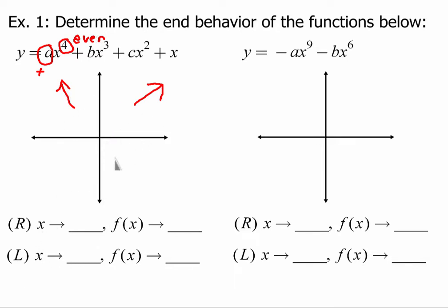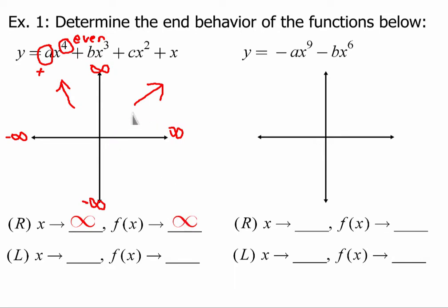Remembering that up is infinity, right is infinity, left is negative infinity, and down is negative infinity: on the right side, the arrow points up and right, so as x goes to infinity, y goes to infinity. On the left-hand side, x goes to negative infinity, and y goes to positive infinity.